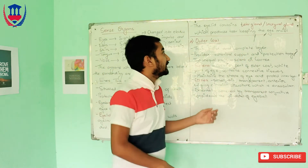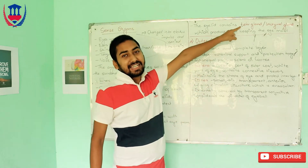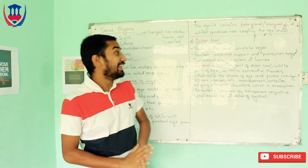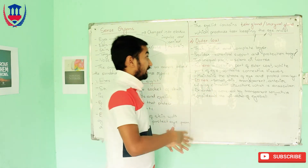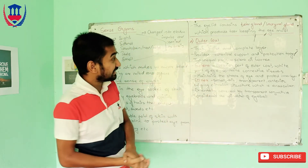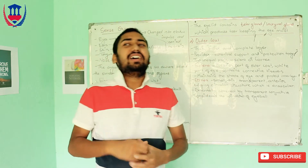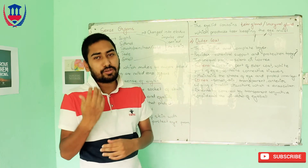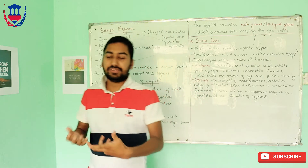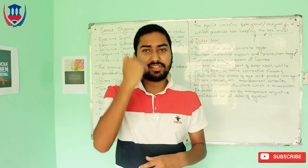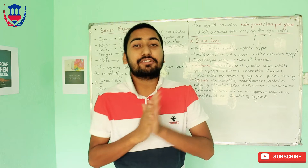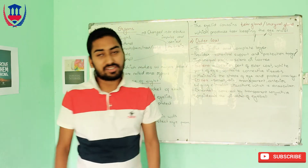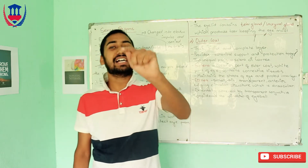There is also the tear gland, or lacrimal gland. Tears contain salt and antiseptics. The tear keeps the eyelid moist and enables frictionless movement. The tear gland produces tears that keep the eye clean and protected.